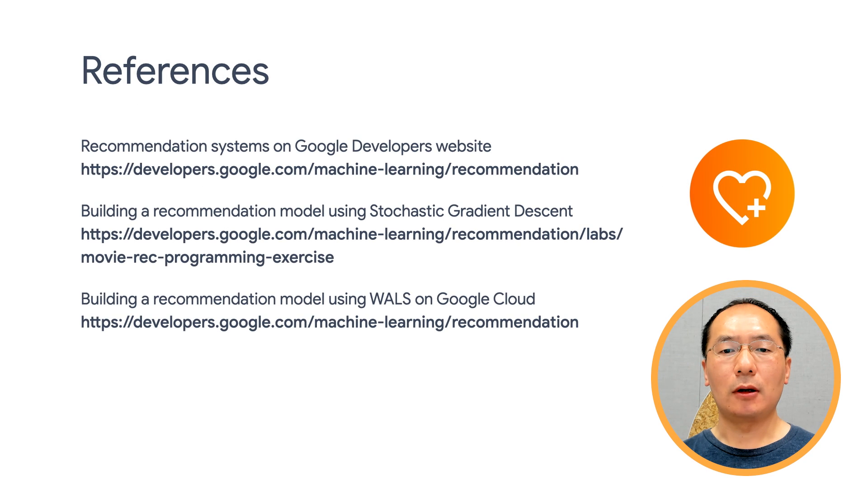Now to sum up, today we first introduced content-based filtering, and then covered collaborative filtering quite a bit. I have listed out a few links of documentation and code implementation of collaborative filtering models based on TensorFlow. These implementations are using TensorFlow core API. In our next video, we'll be introducing you to TensorFlow recommenders, which makes it a lot easier to build recommendation models. See you next time.